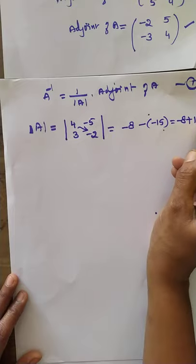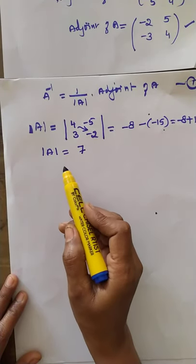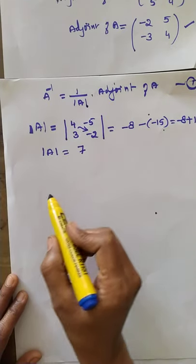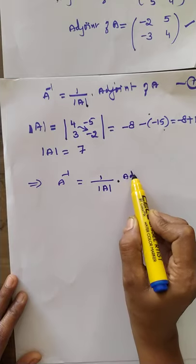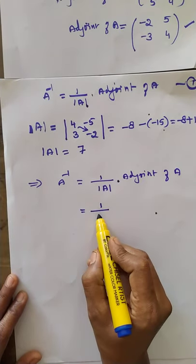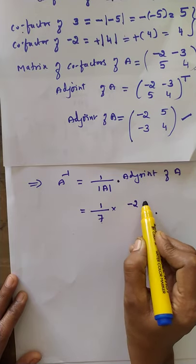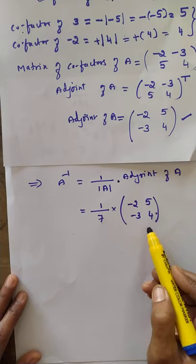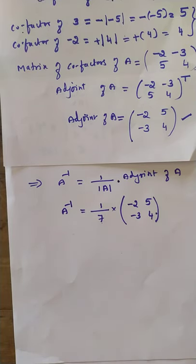To find the inverse: determinant of A = (-8) − (−15) = -8 + 15 = 7. The inverse of A = (1 / determinant of A) × adjoint of A = (1/7) × [-2, 5; -3, 4]. This is the inverse of the 2×2 matrix A.